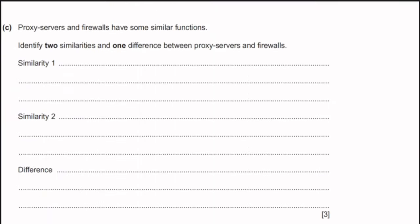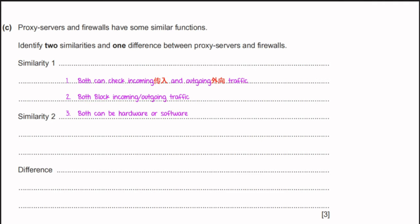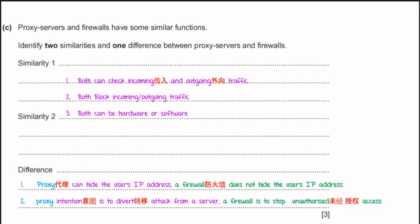Question 1c: proxy servers and firewalls have some similar functions. Identify two similarities and one difference. First similarity: both can check incoming and outgoing traffic. Second similarity: both can block incoming and outgoing traffic. A difference: a proxy server can hide the user's IP address while a firewall does not. Another difference: a proxy server's intention is to divert attacks from a server, while a firewall stops unauthorized access. Also, a proxy protects a server while a firewall protects an individual computer.